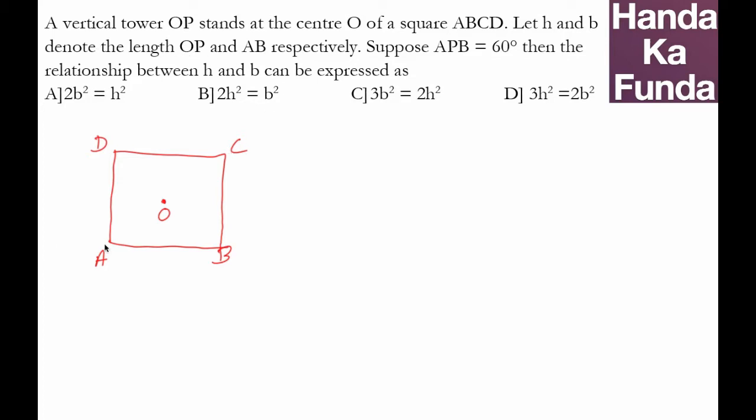So let's say this length AB is B, and OP - I am drawing the tower separately - OP, this is of height H. I also know that the angle APB is 60 degrees, so let me draw that as well.